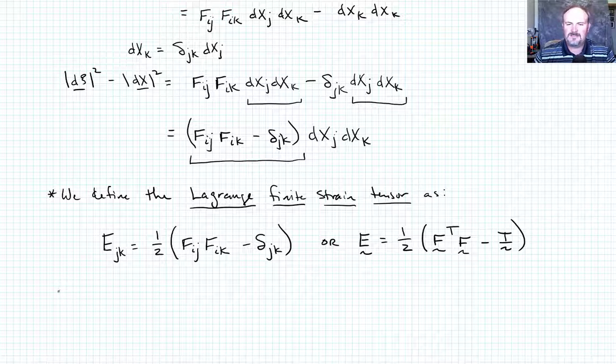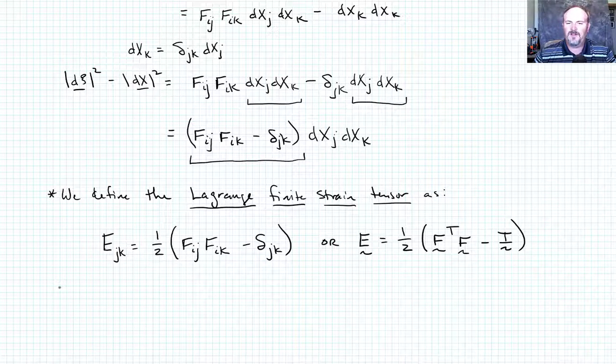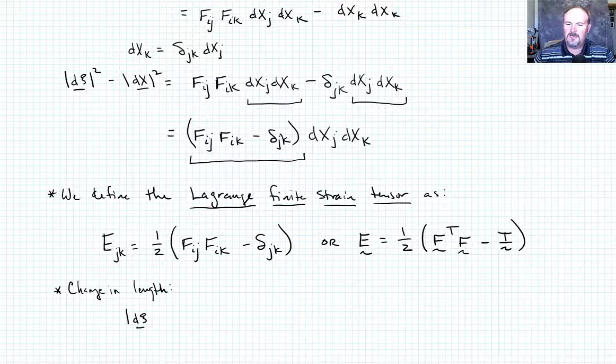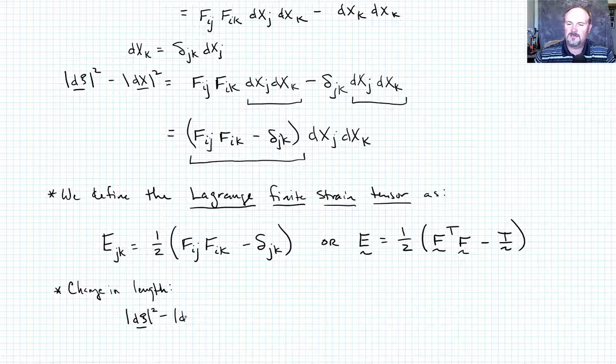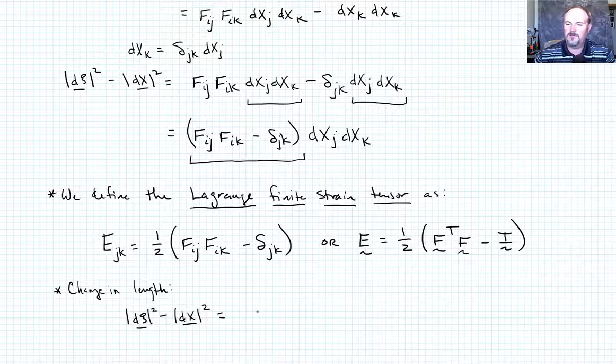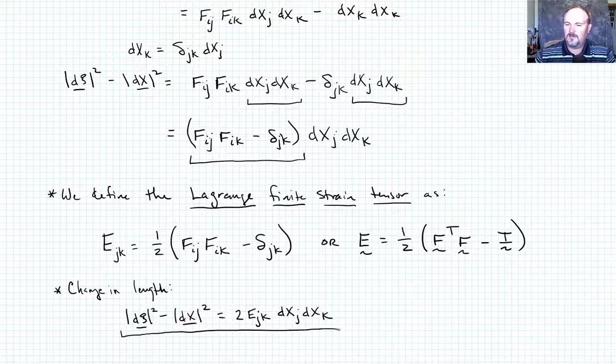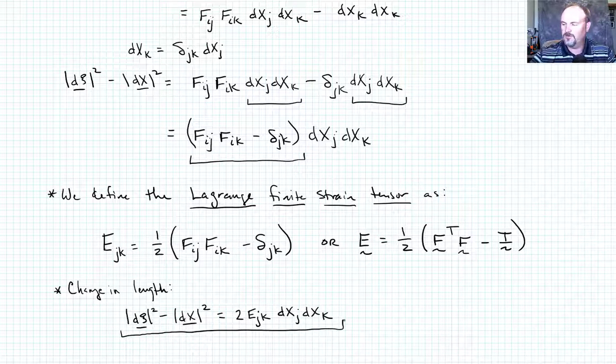So to complete out this section on the Lagrange finite strain tensor, we can then rewrite the change in length measure. So change in length is now going to be given by |dx|² minus |DX|² is equal to 2E_jk times DX_j DX_k. So there's our first relationship that we want to use as we go forward.